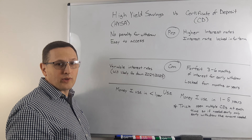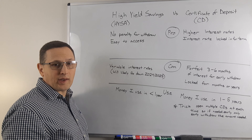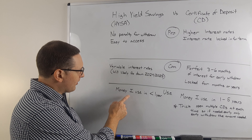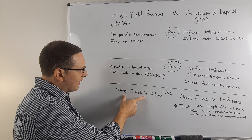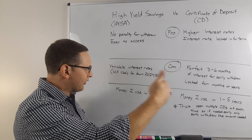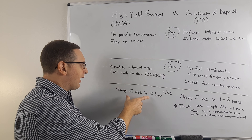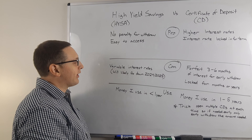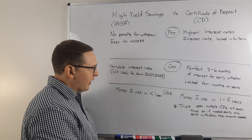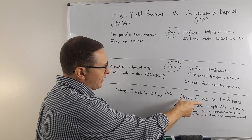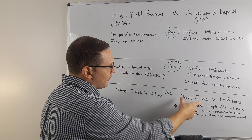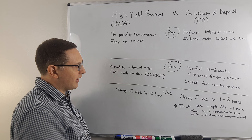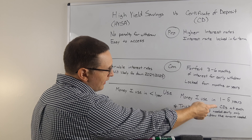So how do I use high-yield savings accounts and CDs? Any money that I need in the next six months or a year, I generally keep that in a high-yield savings account. Any money that I need to use in the next one to five years, I open CDs.